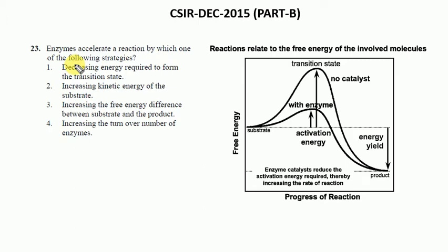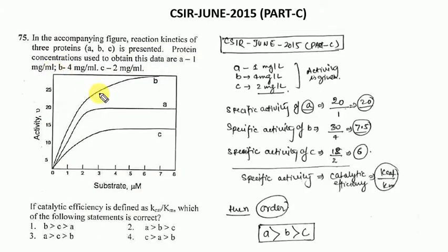Let's see the second question. The second question was asked in CSIR June 2015, Part C. The question is: in the accompanying figure, reaction kinetics of three proteins A, B, C is presented. Protein concentrations used to obtain this data: A is 1 mg per ml, B is 4 mg per ml, C is 2 mg per ml. This is the graph: substrate versus activity for proteins A, B, and C.